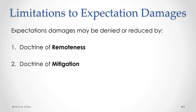Just because an amount is determined to be needed to put an innocent party back in the same financial position it expected to be in if the contract had been properly performed is not enough for a court to grant that amount as damages. A court will also apply two legal doctrines to limit the amount of expectation damages a plaintiff is entitled to. Those doctrines are called the doctrine of remoteness and the doctrine of mitigation.